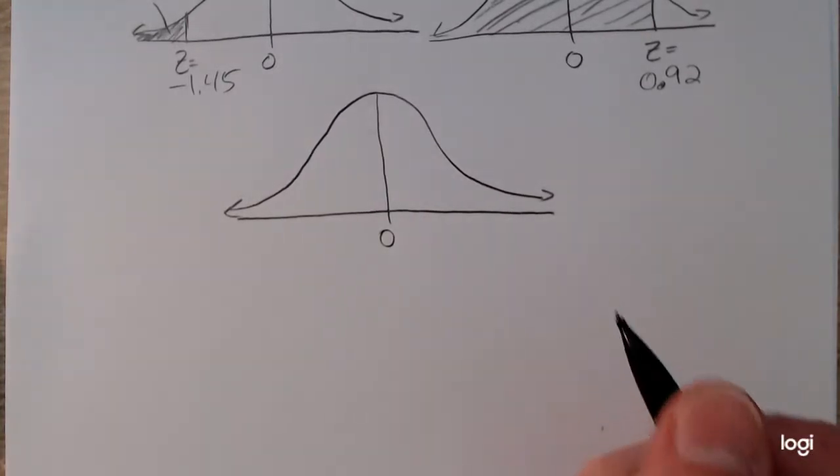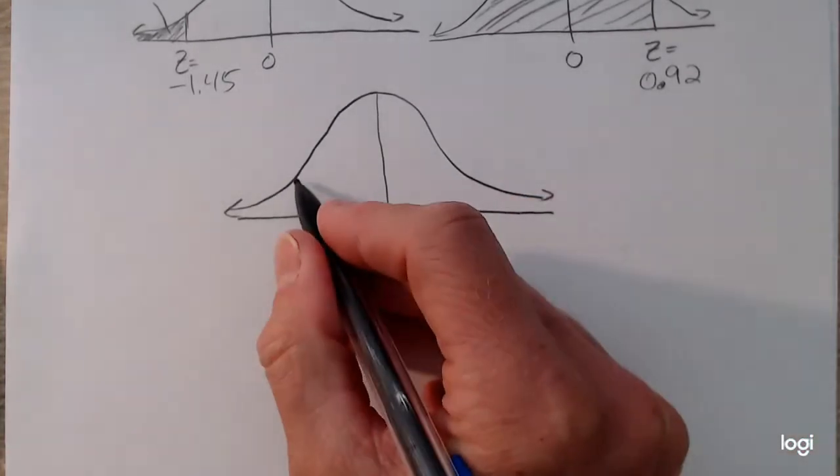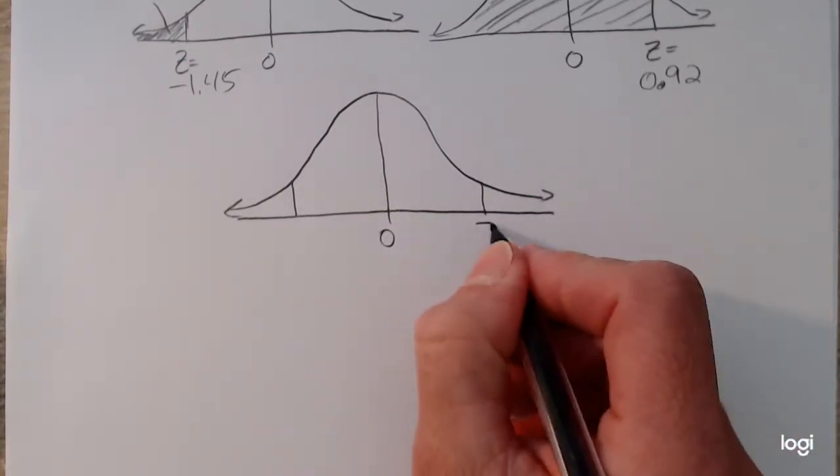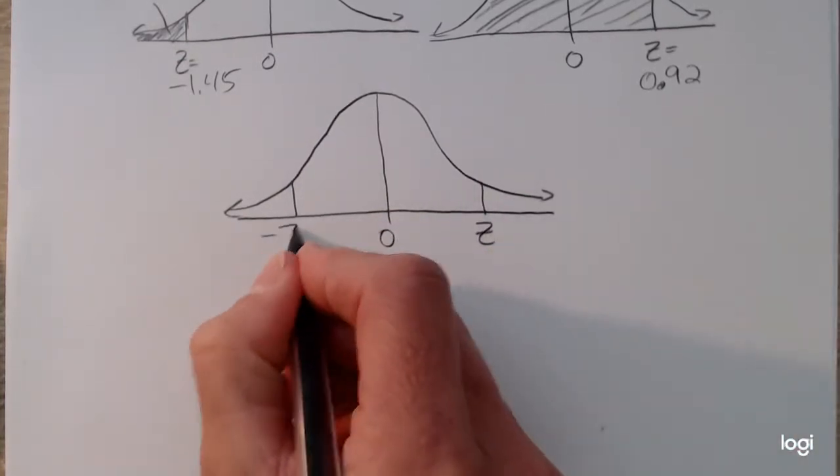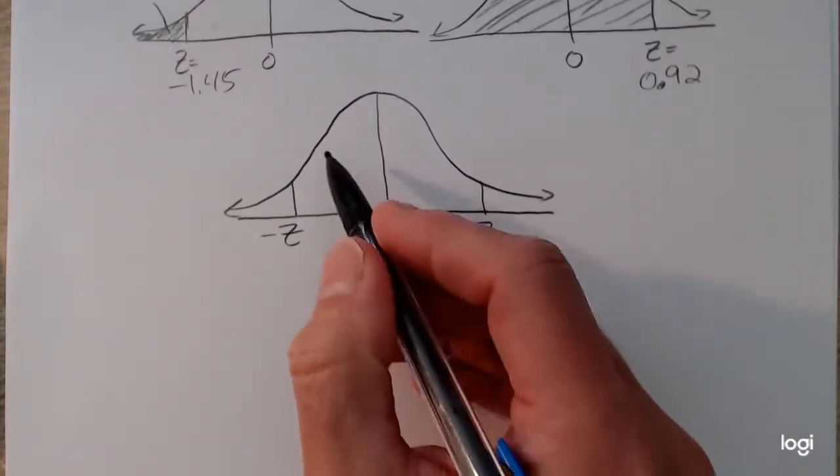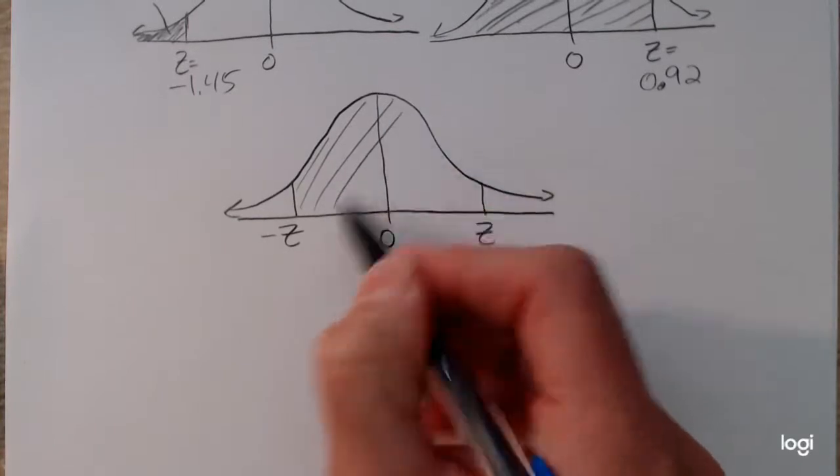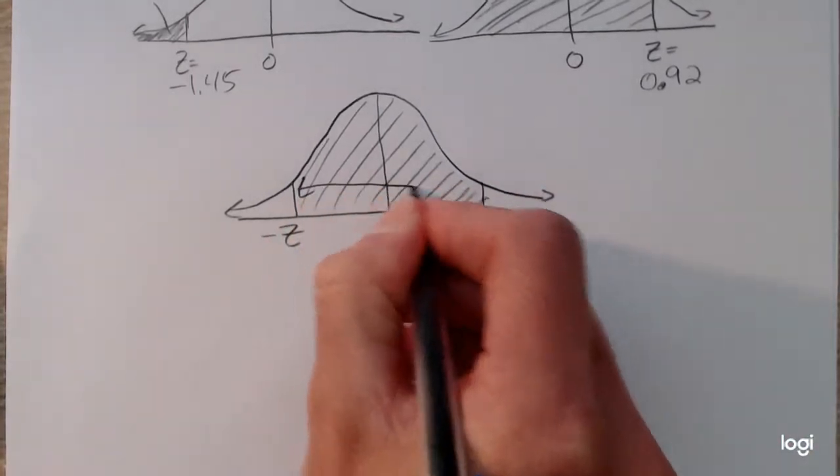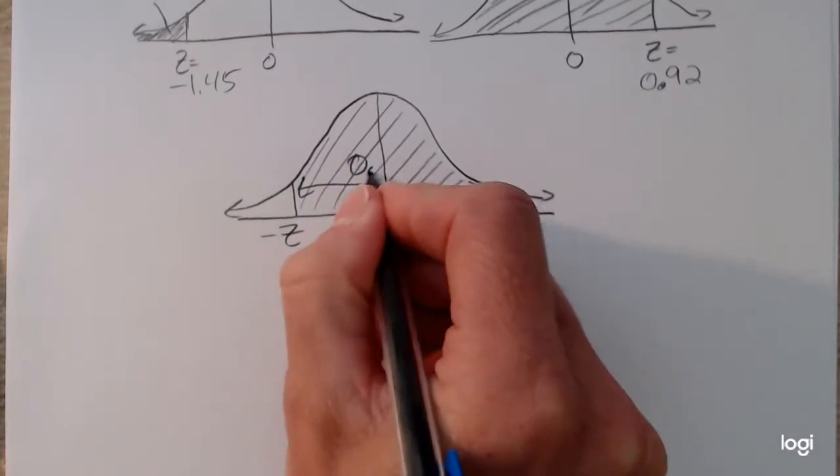So I have two symmetric z-scores. So they will be the same with respect to absolute value, but they're going to be opposite in sign. And I'm shading an area between them. And that area I want is 0.95.